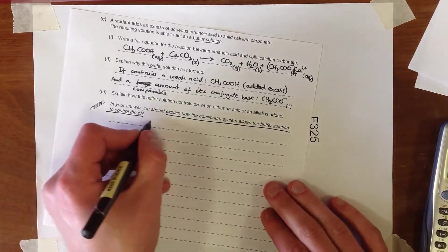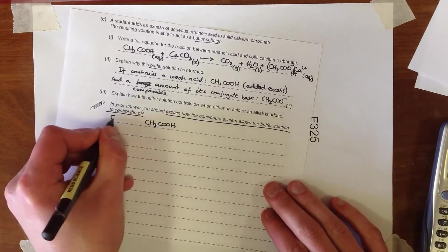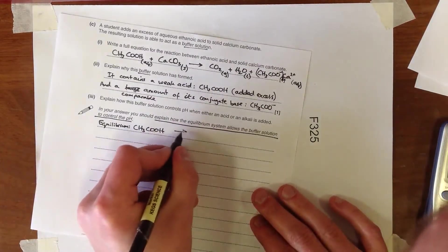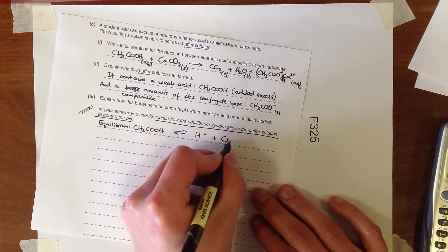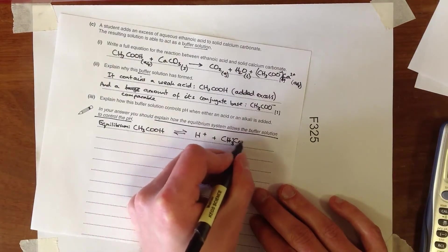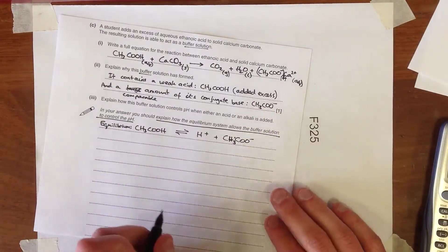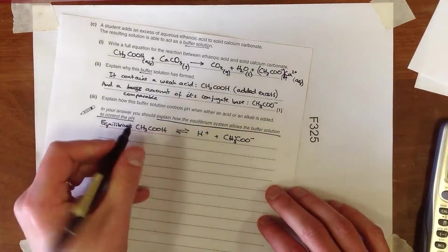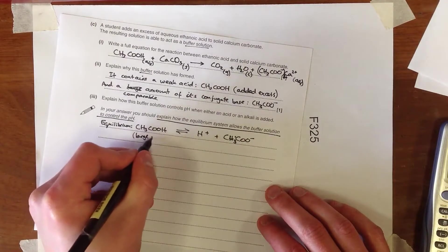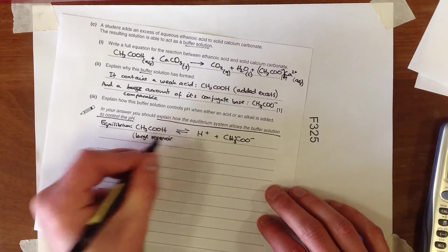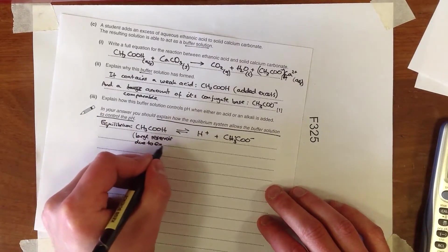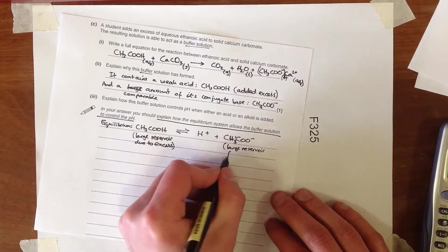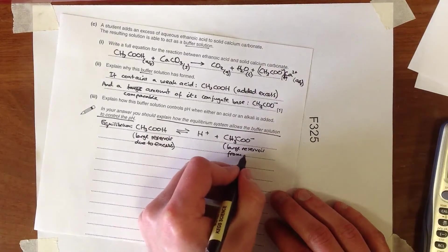So you've been told that's what the buffer is doing. So you need to consider which equilibrium they're actually talking about here. And the equilibrium is between ethanoic acid and H+ ions and its conjugate base, ethanoate. That's the key equilibrium. And we've got a large reservoir of undissociated acid because it's in excess. We've got a large reservoir due to excess. And it's a weak acid. And we've got a large reservoir of this from calcium ethanoate.